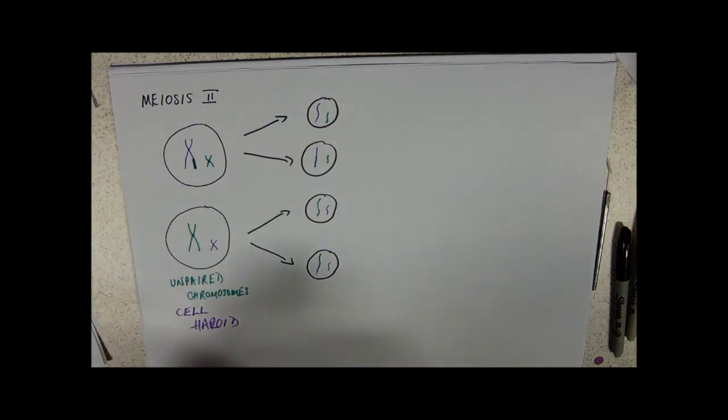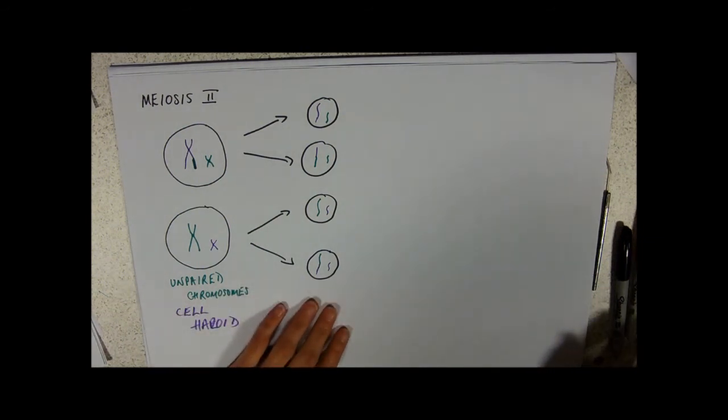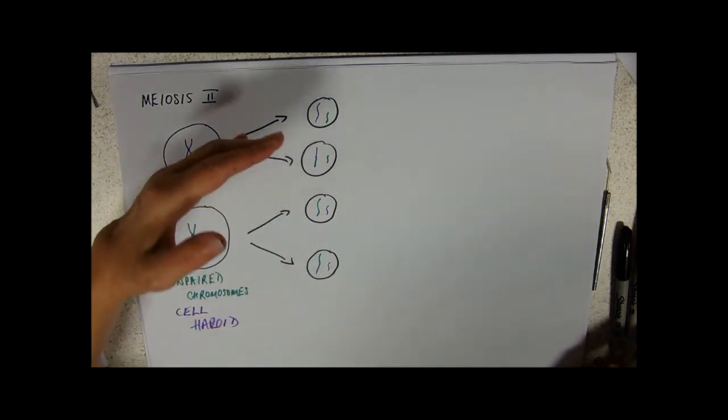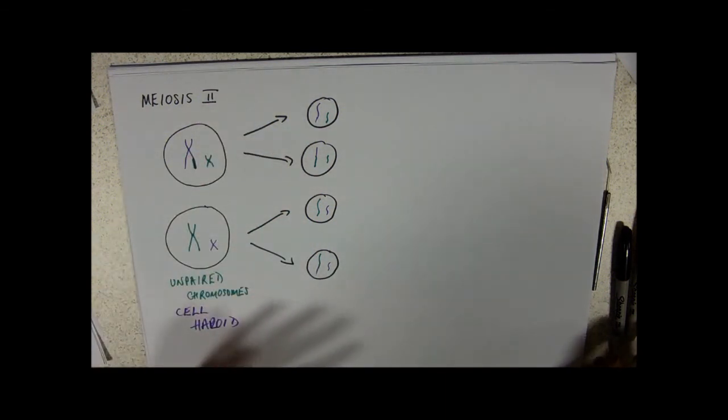And they are all different. So, remember back at the beginning, we had two pairs of chromosomes in each cell. We've now only got one of each sort of chromosome. So, these are our haploid, chromosomes not in pairs, gametes, all genetically different.